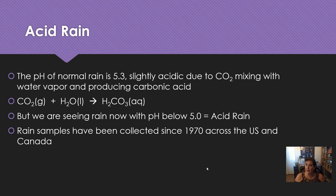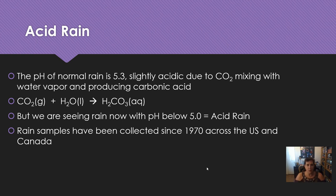So let's talk a little bit about acid rain. The pH of normal rain is about 5.3 — it is a little acidic, again, because there's CO2 mixing with the water in the clouds and making carbonic acid. But we're seeing rain now with pH below five, like four and a half, even four, sometimes in the threes. And that's acid rain because it's not normal. We've been collecting rain samples since about 1970 all across the United States and Canada, so we have lots of data.